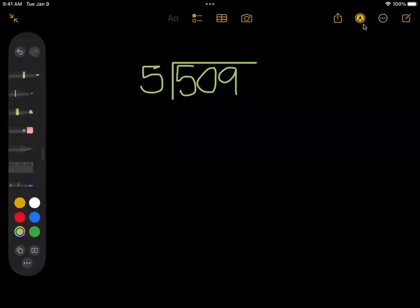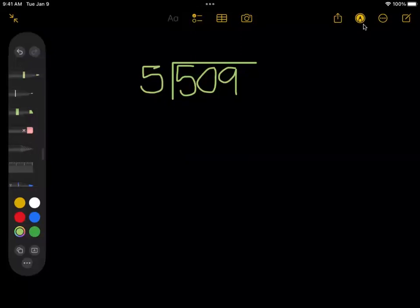Hello there, welcome back. For this worked example we're going to be taking 509 and dividing it by 5. We are not going to get a remainder this time; we will get a decimal answer.